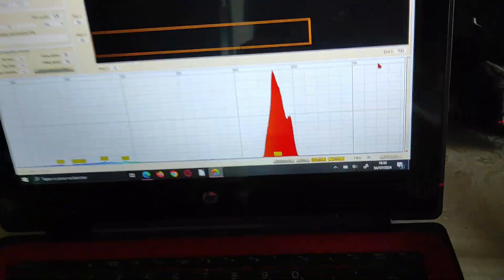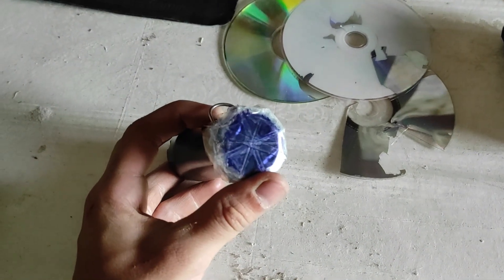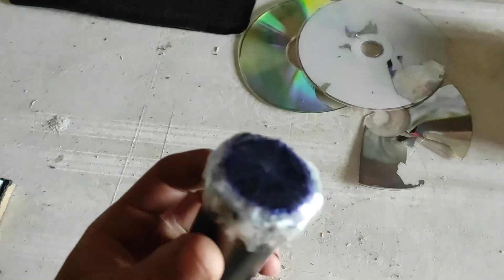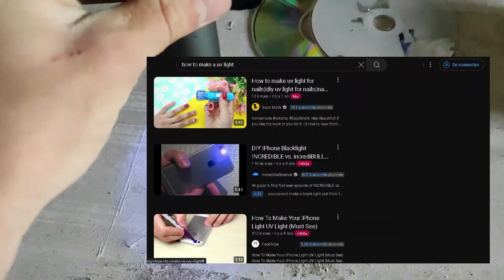A more interesting thing to do is to debunk the famous DIY black light, like this one. Basically, it's just a LED flashlight with layers of blue and purple tape on it to filter the light. And many videos claim it makes UV, but is it true?